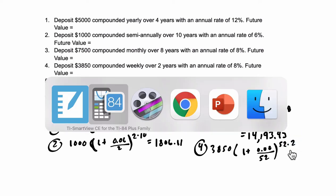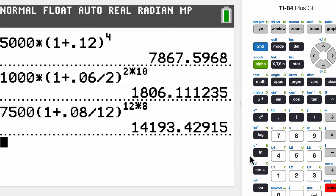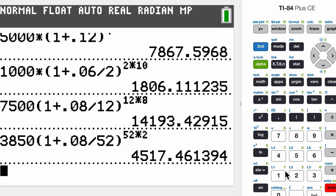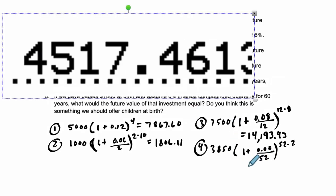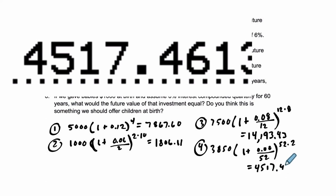So $3,850 times 1 plus 0.08 divided by 52. So every single week this money is going to be growing, and that's going to compound 52 times a year times 2 years. So that's over $4,500. Let's put that exact value in. So to the nearest penny, $4,517.46.